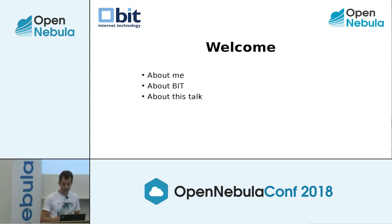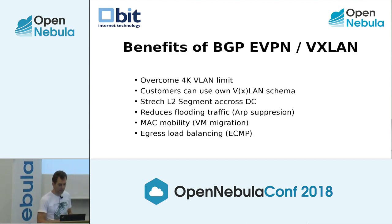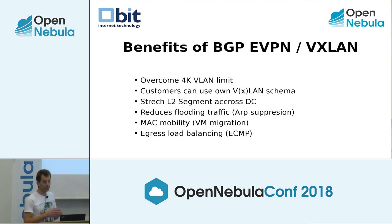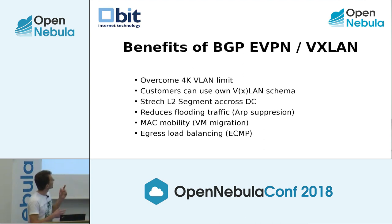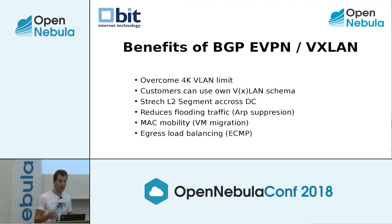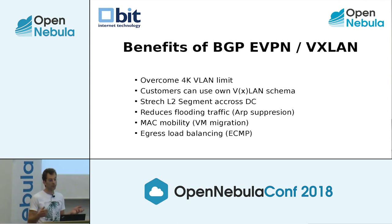This talk is about how you can stretch layer two broadcast domains between data centers. The benefits of BGP eVPN include overcoming the 4K VLAN limit. Customers can use their own VLAN or VXLAN schema, especially if they bring hardware to your data center and want to use their own equipment alongside future cloud machines - you can actually bridge them together and use their own VLAN schema.